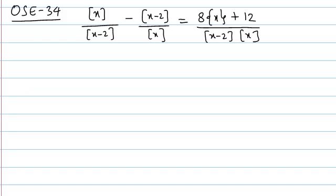This is objective solved example question number 34. If you look at the left hand side it looks complex, but if you look at the denominator on the right hand side, that gives us an idea that if you take LCM on this side, the denominators will cancel out.